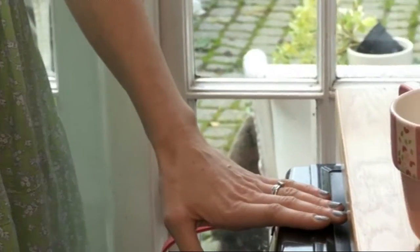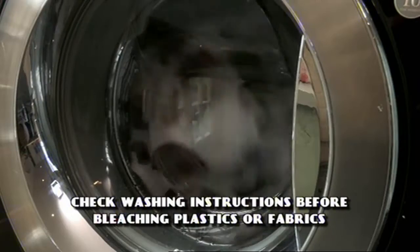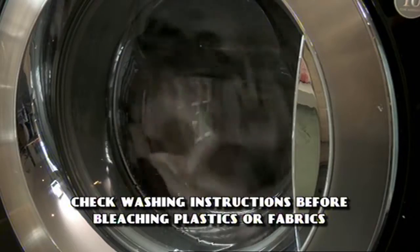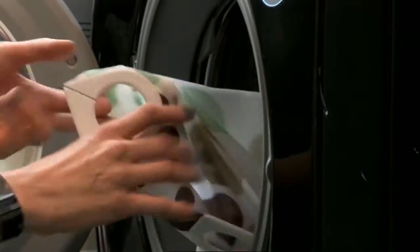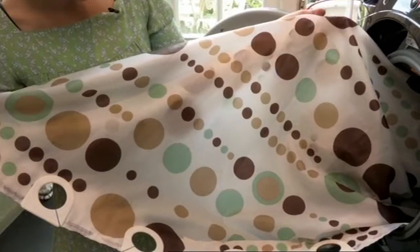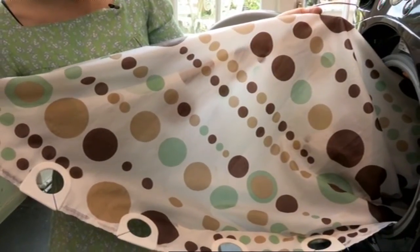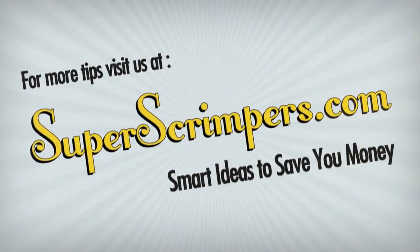Now let that go through the rinse cycle and it's going to come out perfectly pristine. Now the bleach has worked its magic. You can take it out and look at that. Old spick and span, perfect.